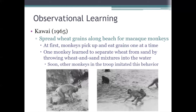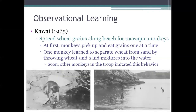There's also an interesting report of observational learning occurring in the wild, involving a troop of monkeys living on a beach in Japan. A researcher would spread grains of wheat for the monkeys along the beach, and at first the monkeys would painstakingly pick up the wheat grains one by one. But eventually one monkey figured out she could grab a handful of the wheat-and-sand mixture, throw it into the water, and skim the wheat off the surface, since it would float while the sand would sink. Once that monkey learned this technique, other monkeys started doing it too — the behavior spread throughout the whole troop. They also appeared to learn other behaviors through observation, like washing the sand off sweet potatoes and bathing themselves in the ocean, behaviors that also spread through the troop after one monkey tried them and others imitated.